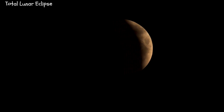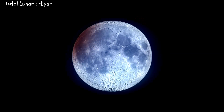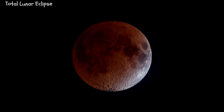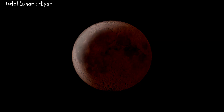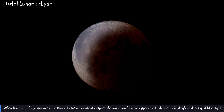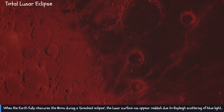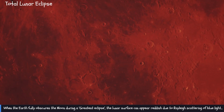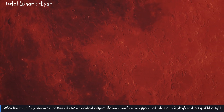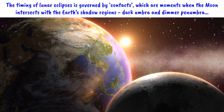Despite being in the umbra, the Moon is still visible because some sunlight is refracted, or bent, into the umbral shadow cone by the Earth's atmosphere. This refracted light illuminates the Moon, allowing us to see it even during a total eclipse. When the Earth fully obscures the Moon during a greatest eclipse, the lunar surface can appear reddish due to Rayleigh scattering of blue light — the same process that gives sunrises and sunsets their orange glow. This happens because the Earth blocks direct sunlight, leaving only the refracted, atmosphere-filtered light to illuminate the Moon.